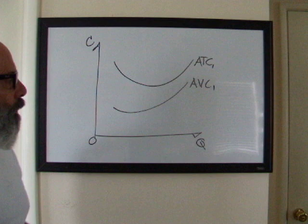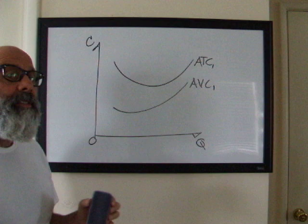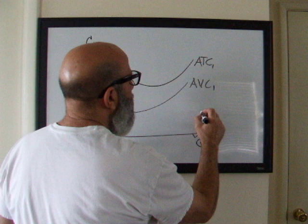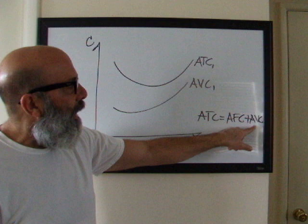So we know that one of the ways to formulate ATC is to take total cost and divide by quantity. Another way is to say I can get ATC by taking my average fixed cost plus my average variable cost. So if I just sum up my average fixed cost and my average variable cost, I get my average total cost.